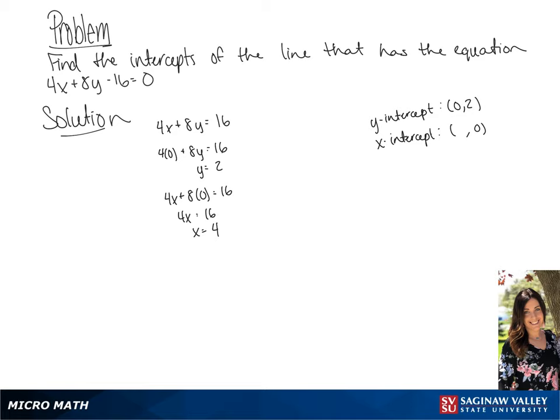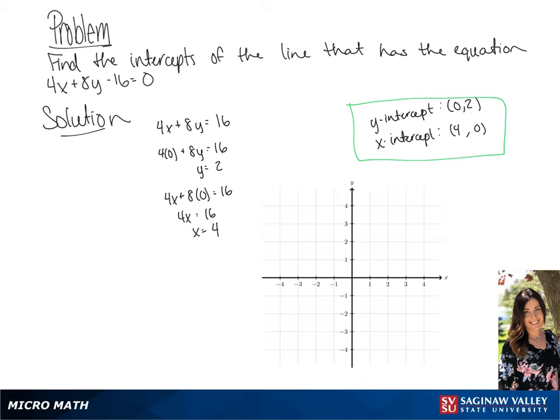And the x-intercept is 4, 0. And now we're going to graph this. We're going to start by graphing the y-intercept, which is 0, 2. And now the x-intercept, which is 4, 0.